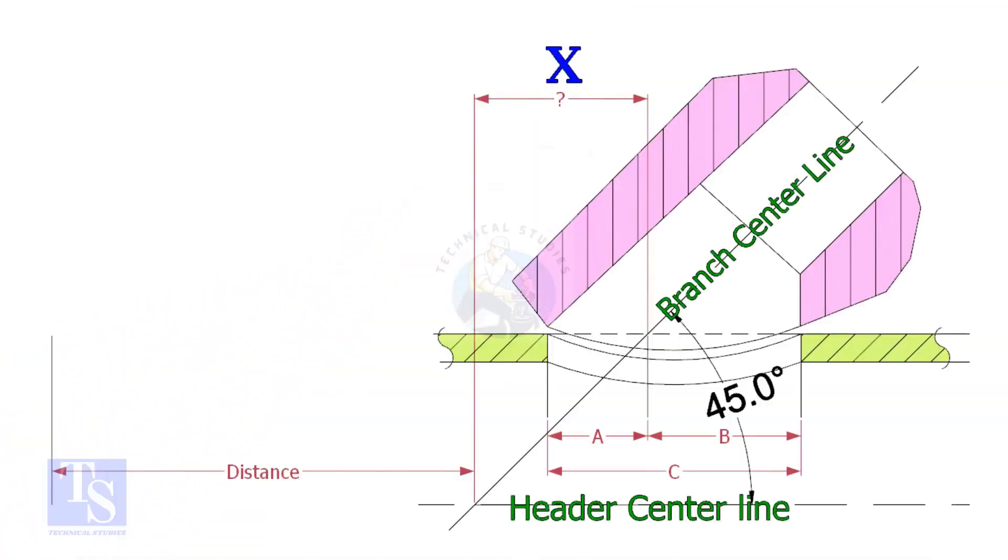Most commonly, laterolettes are used for 45 degree branch connections. In a drawing, the distance to the center of a laterolette is given from a certain point. This distance is actually on the center of the header pipe. By applying a simple calculation, we can find the actual center that comes on the top of the pipe.